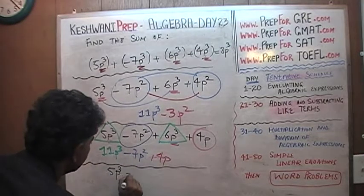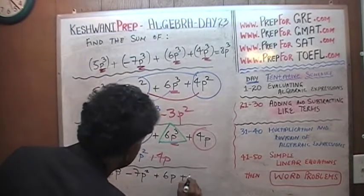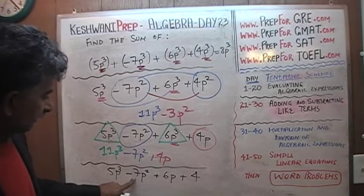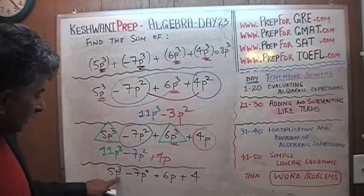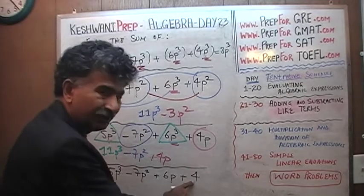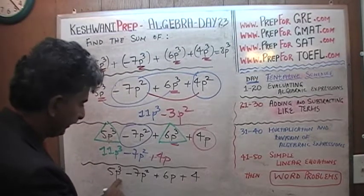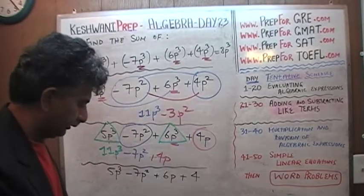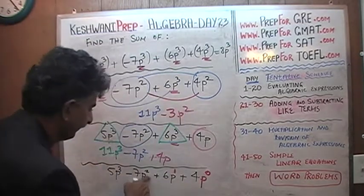What if we had 5p cubed minus 7p squared plus 6p plus 4? These four terms cannot be added because they are all unlike terms — they have the same variable p but different exponents: p has an exponent of 1, p squared has an exponent of 2, p cubed has an exponent of 3. And even the constant 4 has a p with an exponent of 0, even though we don't see it written.